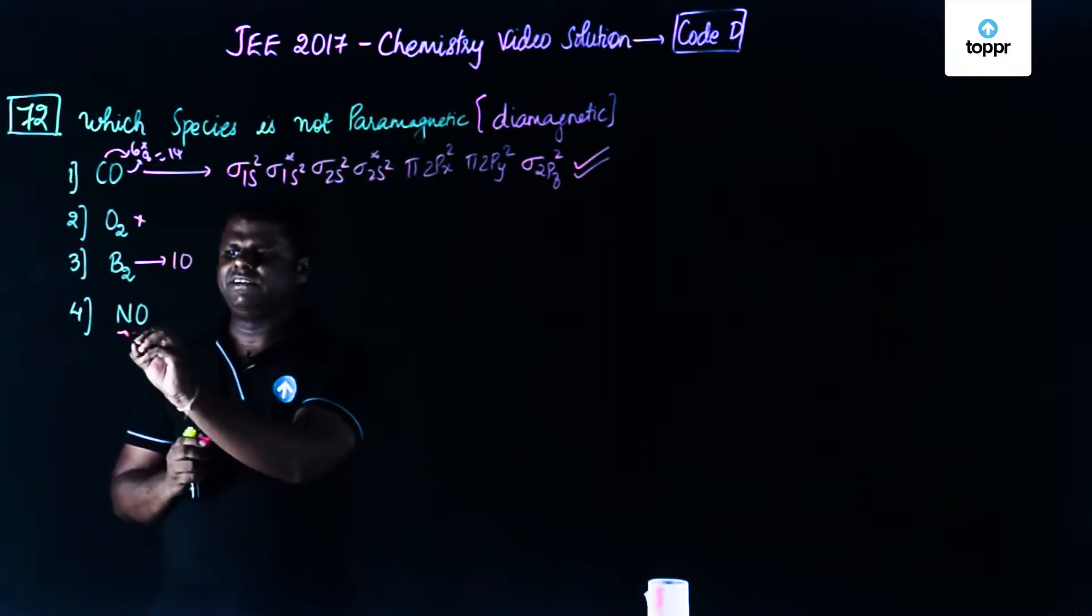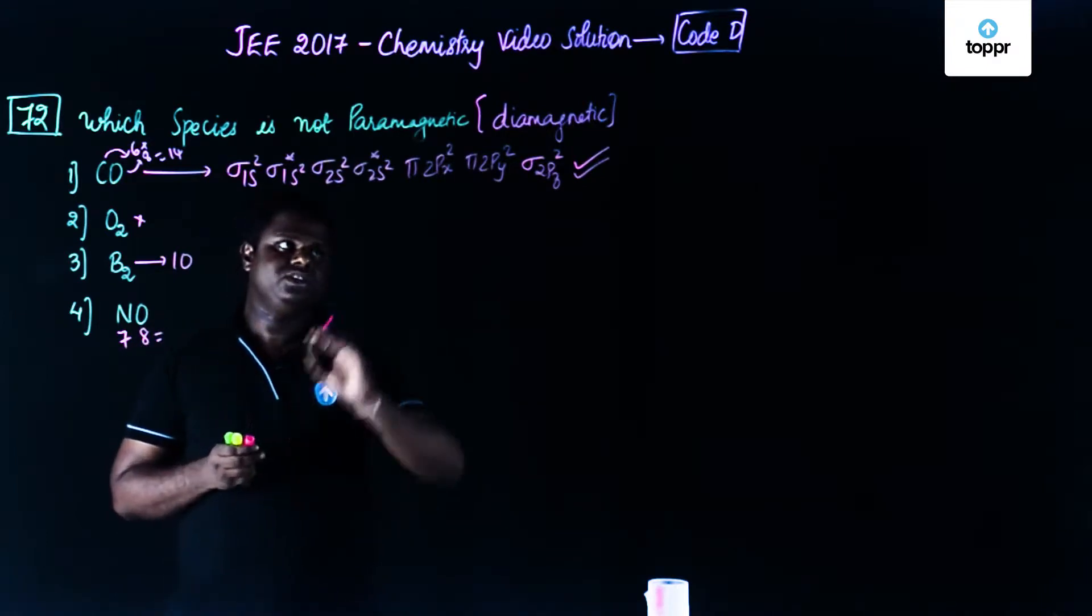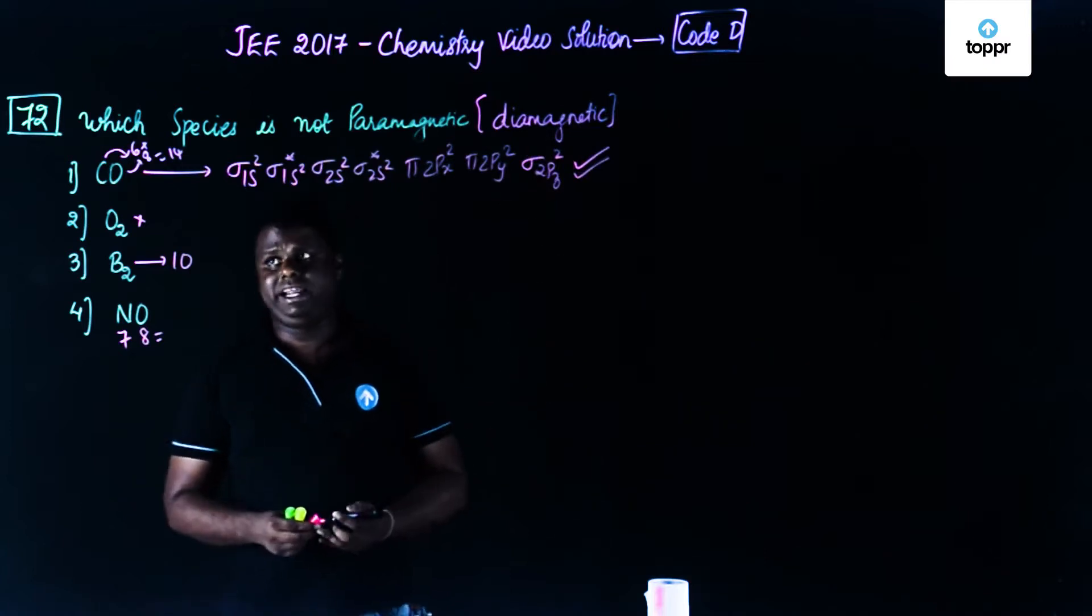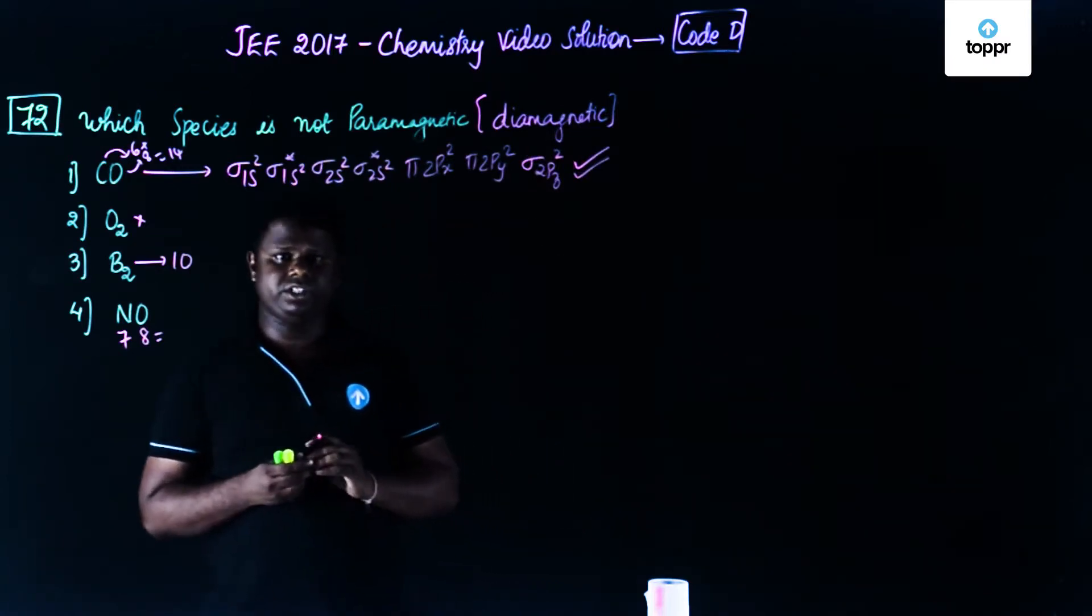Similarly, NO, nitrogen is 7, oxygen is 8, 7, 8 is again 15. It would be like a sigma pi star 2px1, again unpaired electron. Among these options, option number 1 that is carbon monoxide is the correct answer.